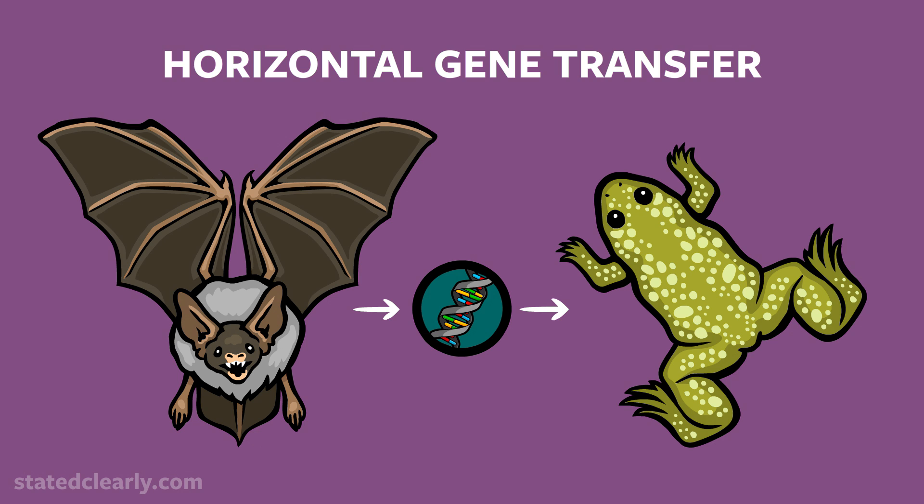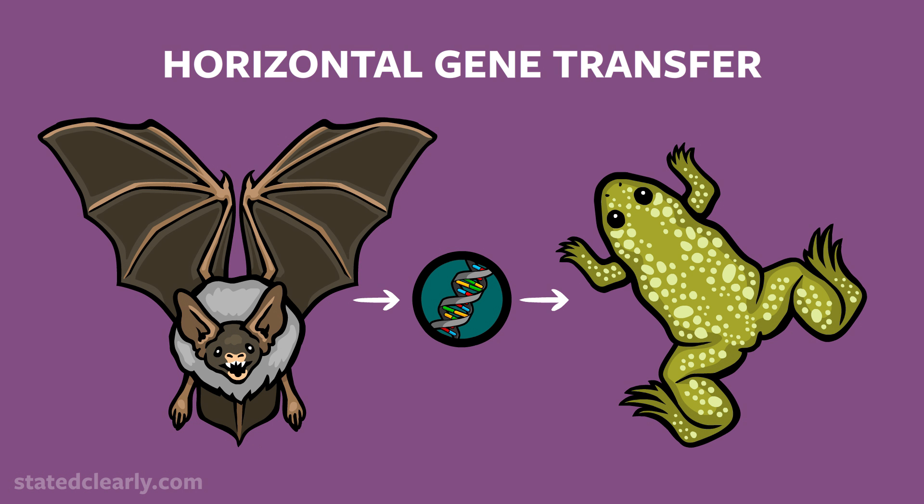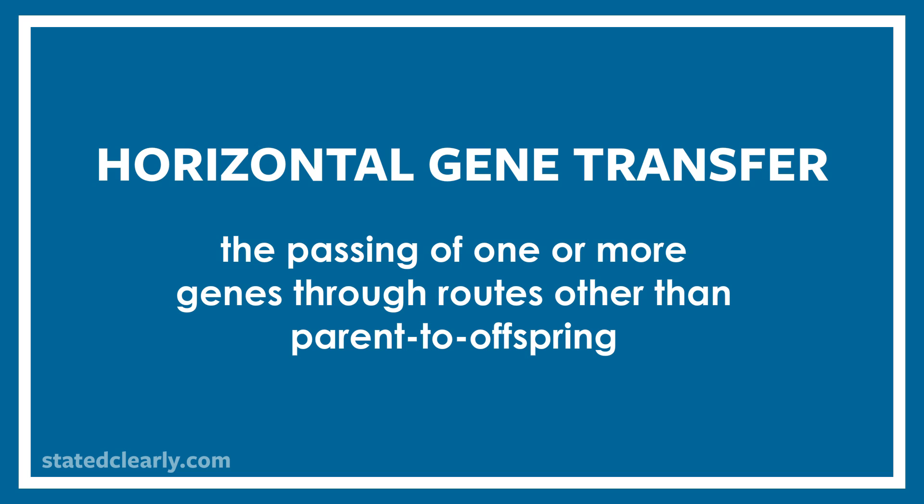What is horizontal gene transfer? Most of us are used to the idea of vertical gene transfer — that is, the passing down of genes vertically from parent to child. In contrast, horizontal gene transfer, sometimes called lateral gene transfer or sideways gene transfer, is exactly what it sounds like: it is the passing of one or more genes through routes other than parent to offspring.